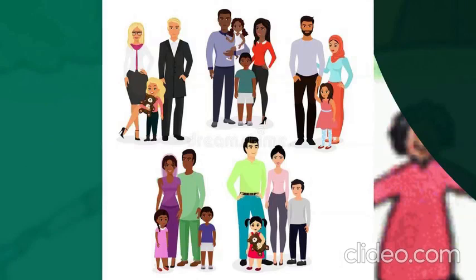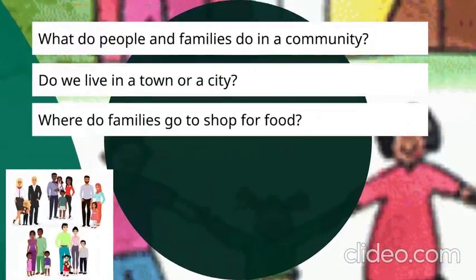The father in one family might be working as a doctor, while another father might be an engineer, and a third may be a pilot. One of the mothers might be a housewife, while another is a teacher and another is a nurse. So each member of this community does their own job. People and families do different things in a community.